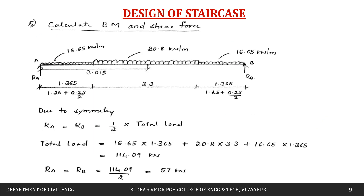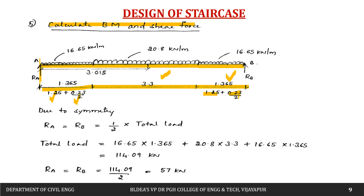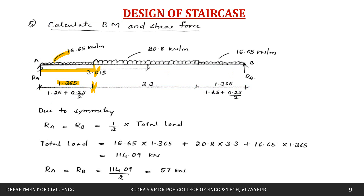Now we calculate bending moment and shear force. The total span has landing of width 1.365 m (= 1.25 + 0.23/2) on each side carrying 16.65 kN/m, and the going of 3.3 m carrying 20.8 kN/m. Let us call the supports A and B and calculate reactions Ra and Rb.